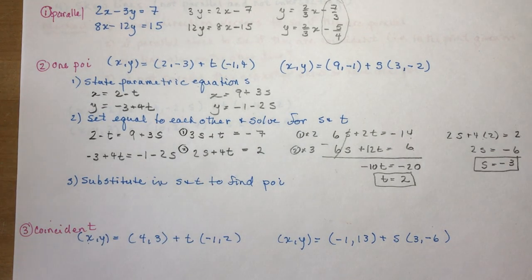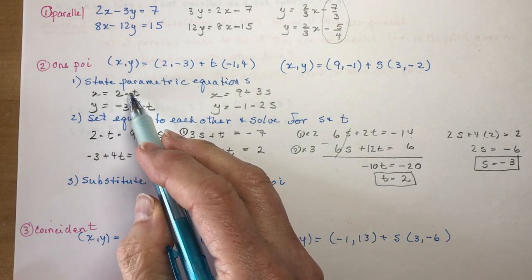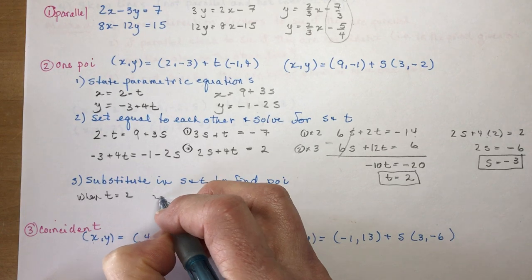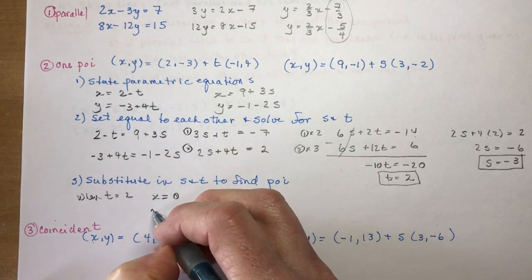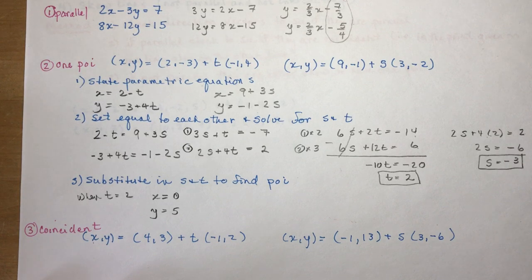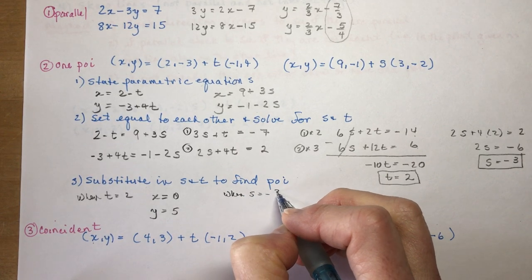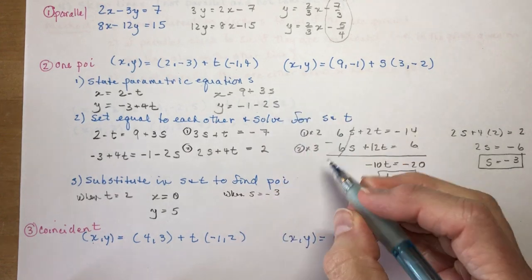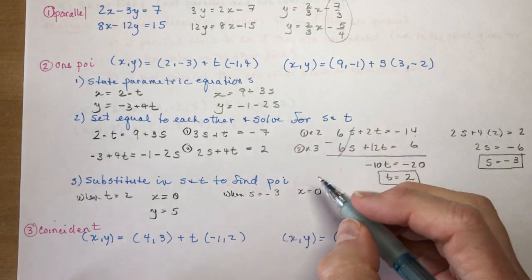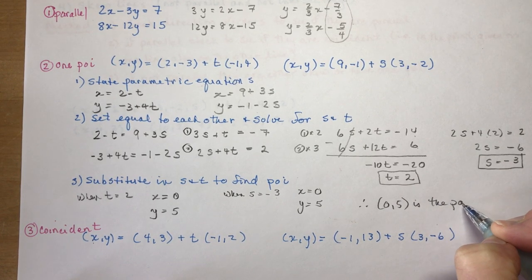You can pick whichever combination you want. Now knowing s equals minus 3 and t equals 2, I can find the point of intersection by plugging into either equation. When t equals 2: x equals 2 minus 2 equals 0, and y equals minus 3 plus 8 equals 5. Checking with s equals minus 3: x equals 9 minus 9 equals 0, and y equals minus 1 plus 6 equals 5. Therefore (0, 5) is the point of intersection.